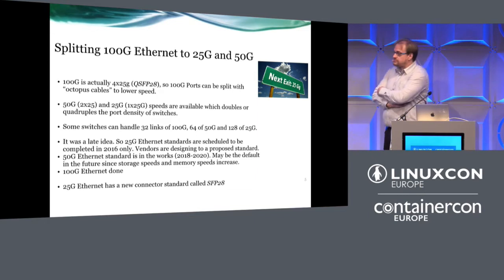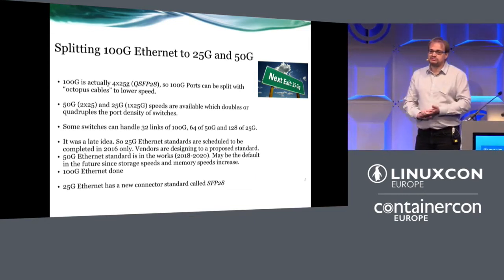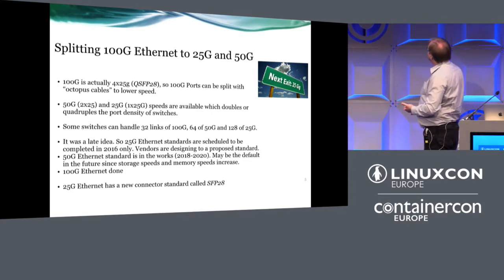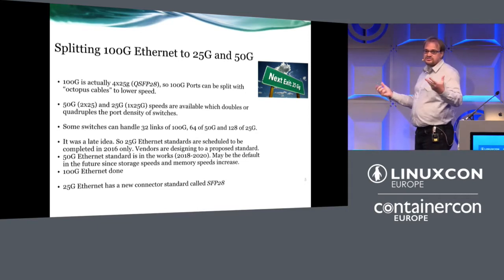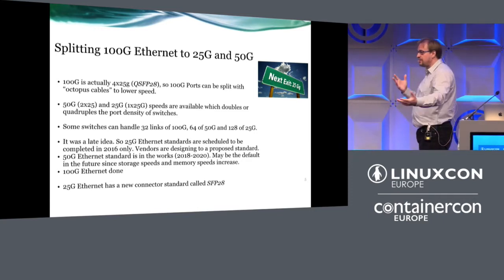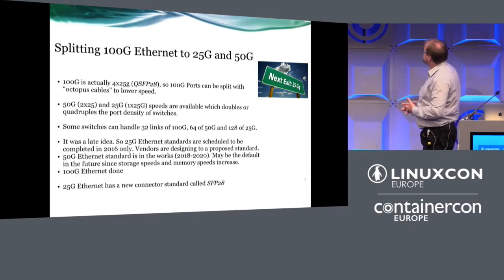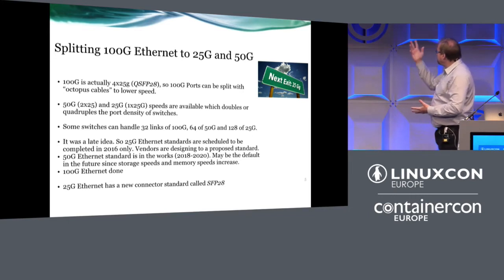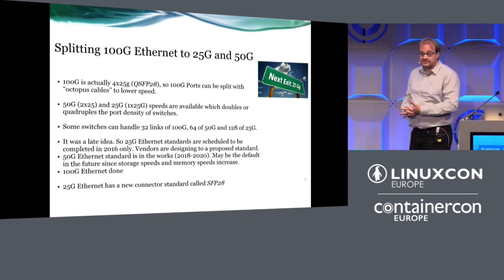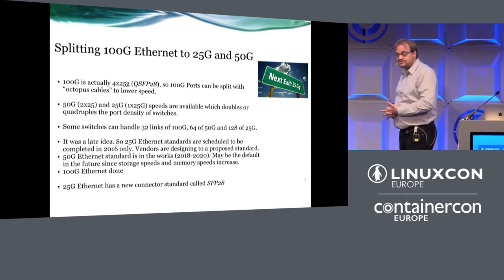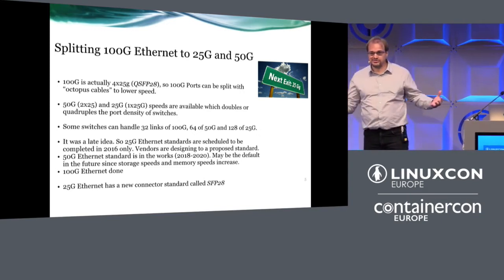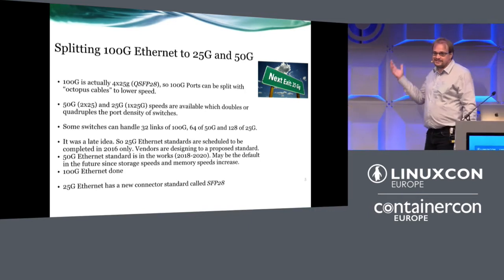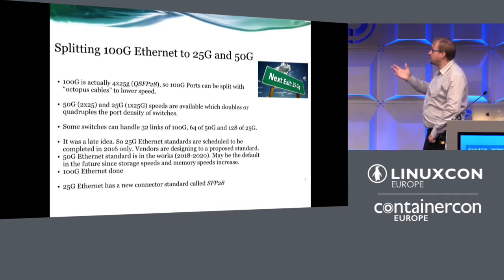Once 100G was out, people realized it's four times 25G. Most servers couldn't take 100G anyway, so the idea was to use splitter cables to split one 100G port from 4×25G into 2×50G or 4×25G — giving a huge fan-out. Switches typically handle 32 links of 100G, 64 of 50G, and 128 links of 25G. This is a massive number of servers that can be bound together with a single switch — never seen before — and allows nice scaling if you don't need full speed.